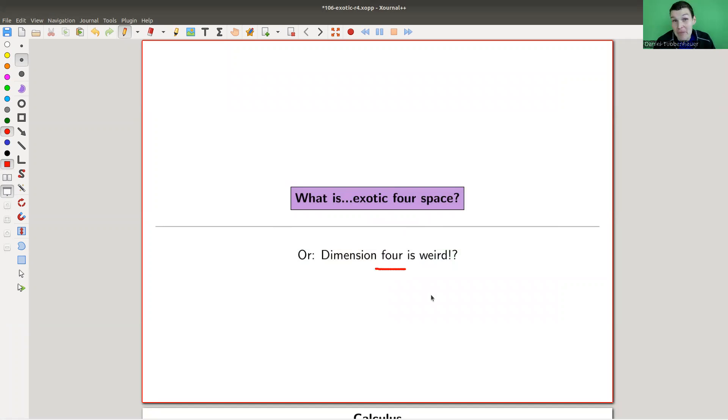So dimension four, space time if you want, depends a bit what space time is. Dimension four, very strange in this regards. And I'm going to talk about exotic four space. So four space is really just R^4. And there's something exotic going on about R^4, which as I said, was quite a shock when it first appeared.